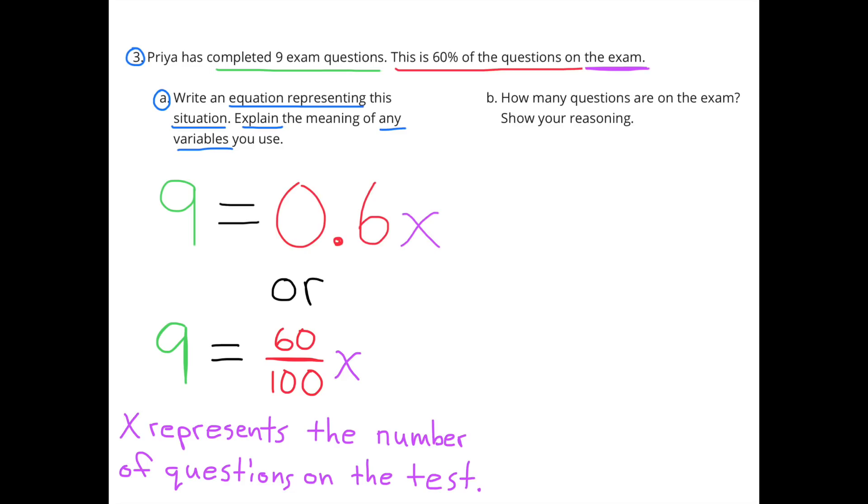Number 3: Priya has completed 9 exam questions. This is 60% of the questions on the exam. Part A: Write an equation representing this situation. Explain the meaning of any variables you use. 9 equals 6 tenths times X, or 9 equals 60 hundredths times X. And the X represents the number of questions on the test.